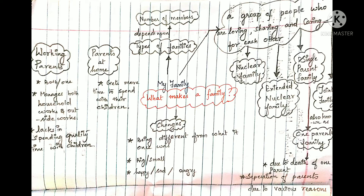The very first point we are going to see under 'My Family' is types of families — how families are classified. Basically, it depends upon the number of members. Depending on the number of members, we classify families into nuclear family, extended nuclear family, single parent family, joint family, and working parent family.